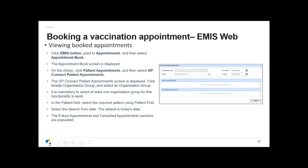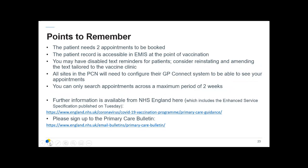If you want to cancel a future appointment, click on it and make a cancellation or change. A couple of things to remember: the patient needs two appointments booked, so vaccine clinics may want to set up Vaccine One and Vaccine Two type sessions. The patient record can be viewed in EMIS at the point of vaccination. If you disabled text reminders in the first wave of COVID, consider reinstating them. All sites in the PCN need to complete configuration for their GP Connect system. The vaccine site sets up their appointments, and booking organisations must ensure they are in the sharing group. You can only search a maximum of two weeks, so book each appointment separately.